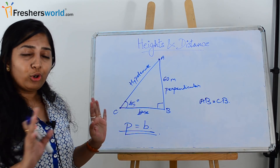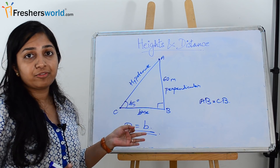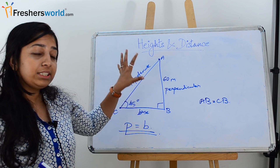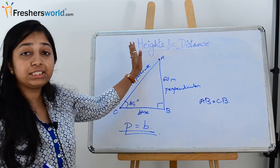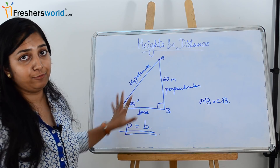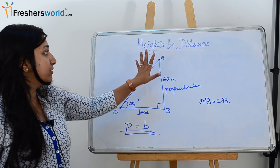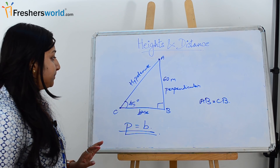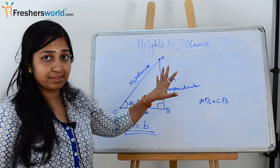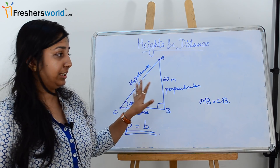So those are all four terms we discussed: trigonometric ratios, the concept of right angle triangle, angle of elevation, and angle of depression. All four topics will help you solve each and every question in height and distance. This complete topic is based on only these four terms, and if you excel in all four, there will not be any question you won't be able to solve.